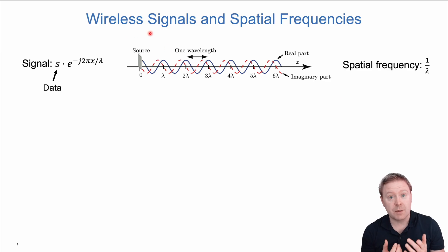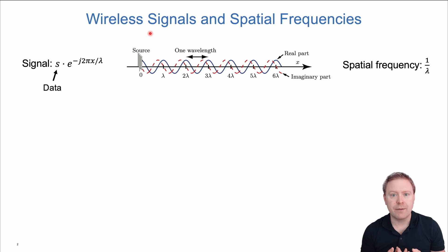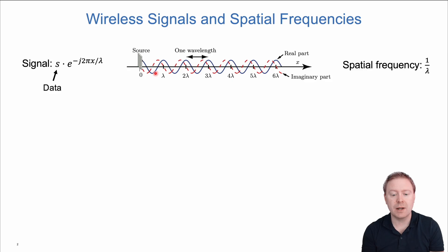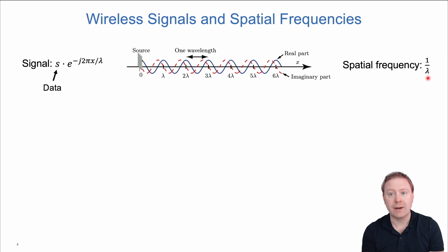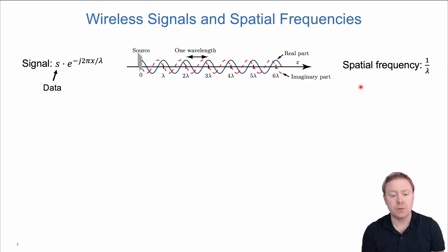The basic idea of a wireless signal is that we transmit it by modulating data onto a carrier wave. The signal might be represented by s, some complex number, that is modulated onto a wavelength lambda. When the signal is transmitted from the source, the real and imaginary parts will oscillate, and when you observe it at different locations along a line—where x is a variable along the line—we get different phase shifts depending on where we are. The distance between two peak values is 1 over the wavelength lambda, and this is important when the signal reaches the receiver.